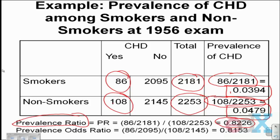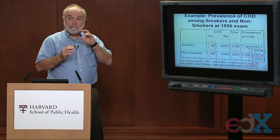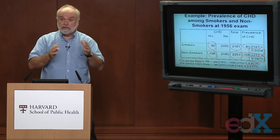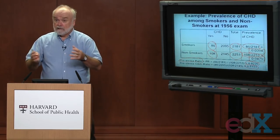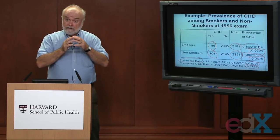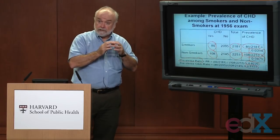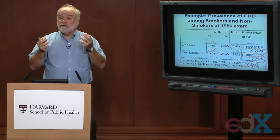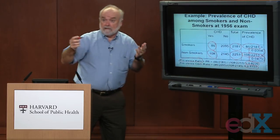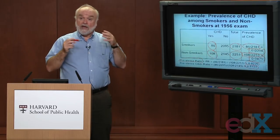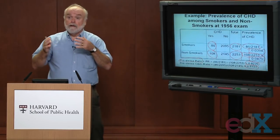The prevalence of existing coronary heart disease among smokers is about 80% of that of the non-smokers. You can also calculate an odds ratio — the prevalence-odds ratio — which is also about 82%. Why are they giving similar results? Because when you have a rare event, a small proportion, the value for the proportion is very similar to the value for the odds. So with proportions of 4% and 5%, the odds ratio and the prevalence ratio are very similar.